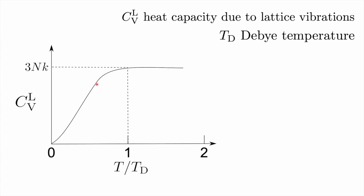There are two reasons why the heat capacity is less than 3Nk at lower temperatures. First, we can't think of individual particles as oscillating independently — they undergo collective vibrations which are more difficult. Second, quantum effects come in: energy absorbed by a material is not continuous but comes in quanta. That is why the heat capacity decreases toward zero temperature. There is a zero-point energy so vibrations still take place at zero Kelvin, but the heat capacity is almost zero.